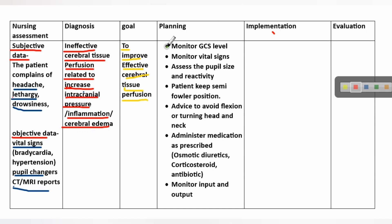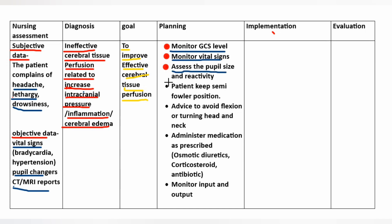Planning: monitor GCS level, monitor vital signs, assess pupil size and reactivity, keep patient in semi-Fowler's position, and advise to avoid flexion or turning of head and neck.